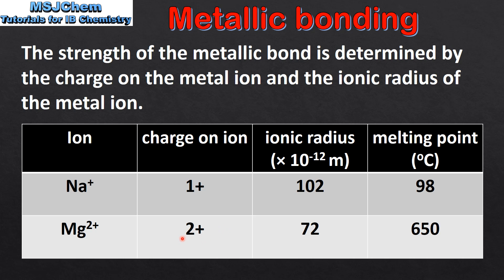Magnesium, with the greater charge on the ion and the smaller ionic radius, has the higher melting point. Therefore, the greater the charge on the ion and the smaller the ionic radius, the stronger the metallic bond and the higher the melting point.